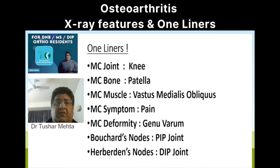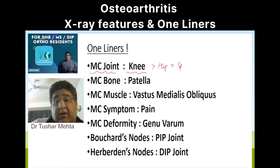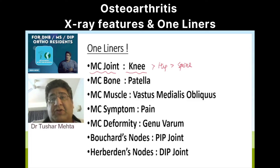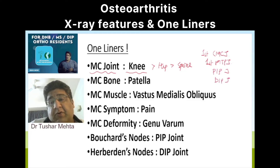A few one-liners associated with this topic: the most common joint involved is the knee; if not the knee, then the hip; if not the hip, then the spine. Small joints are also involved — the first carpometacarpal joint, the first metatarsophalangeal joint, as well as the PIP joint and DIP joint.